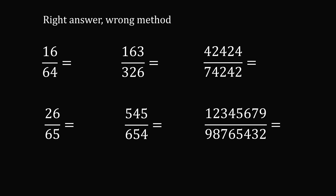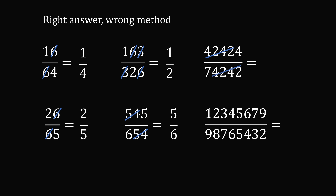Let me show you some examples. Let's say you need to simplify these fractions. 16 divided by 64 — we'll just cancel out the digit 6 and get 1 over 4. 26 over 65 — cross out the 6s and get 2 over 5. 163 over 326 — cancel out these digits and get 1 half. If we just cancel out the digits in these fractions we get the right answer, but it is clearly the wrong method. It doesn't work in general, and everybody would object to using it.